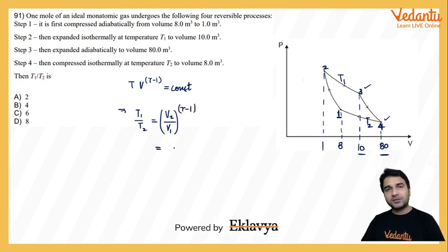So mujhe malum final volume V2 kitna hai point 4 par and initial volume kitna hai point 3 par. So ye ho jayega, 80 by 10 whole to the power gamma.